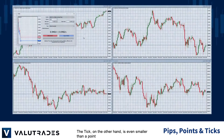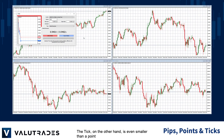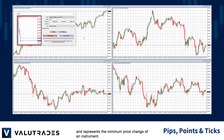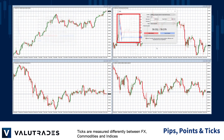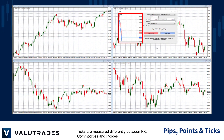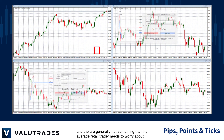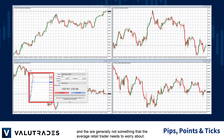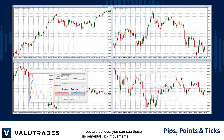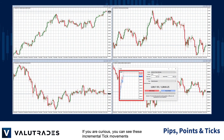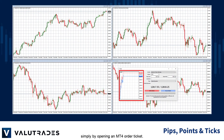The tick, on the other hand, is even smaller than a point and represents the minimum price change of an instrument. Ticks are measured differently between FX, commodities and indices, and they are generally not something that the average retail trader needs to worry about. If you are curious, you can see the incremental tick movements simply by opening an MT4 order ticket.